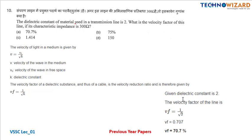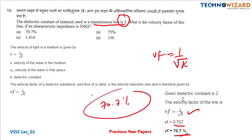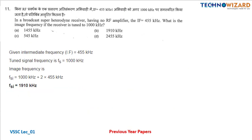Question number ten: the dielectric constant of a material in a transmission line is 2. Velocity factor equals 1 upon root K, where K is the dielectric constant equal to 2. So VF equals 1 upon root 2, which equals 0.707, or 70.7 percent as the correct answer. A very easy, formula-based question.